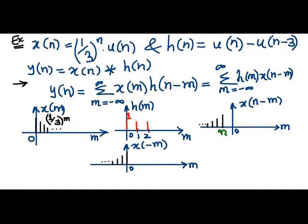To start with, we write down the formula of convolution sum as summation m equals minus infinity to plus infinity, x(m) into h(n-m).